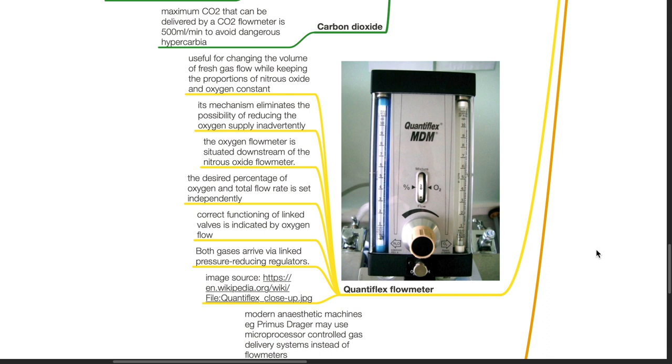The oxygen flow meter is situated downstream of the nitrous oxide flow meter. The desired percentage of oxygen and total flow rate is set independently. Correct functioning of linked valves is indicated by oxygen flow. Both gases arrive via linked pressure reducing regulators.